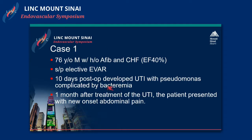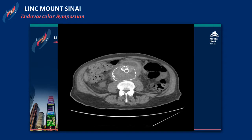The first case I'm going to present is a patient of mine — a 76-year-old male with a history of AFib and CHF. He underwent an elective EVAR for a 6-centimeter aneurysm. Ten days post-op he developed a UTI and was then bacteremic with Pseudomonas. About one month after treatment, he re-presented with new onset abdominal pain and fever.